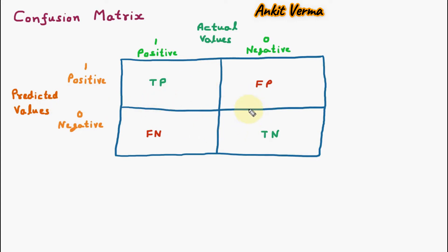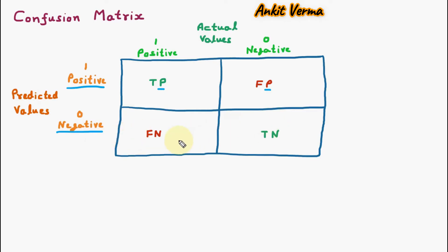To make this confusion matrix, there is an easy method. Just focus on the predicted values. If we are having the positive, on both cells in that row we are having P on the right-hand side, which represents positive. In the next row we are having the negative for the predicted values, so those two cells will have N, which means negative. This is the easy way to construct the confusion matrix.